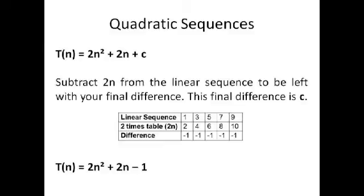We can take this 2n from the linear sequence that we had, so taking 2n, that's 2, 4, 6, 8, 10 from the linear sequence, we're left with minus 1, minus 1, minus 1. And this minus 1 is the final difference which is c. So we know that the final quadratic rule is T(n) equals 2n² plus 2n minus 1. Hope you could keep up with that.